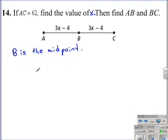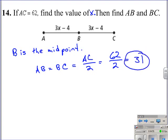And since we know the length of AC, the length of the entire segment, all we're going to have to do is divide that length in half to find the measures of AB and BC. So AB is equal to BC, which is equal to AC divided by 2, which would give us 62 divided by 2, which is 31. So the measure of AB and the measure of BC is 31, because B is the midpoint.